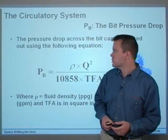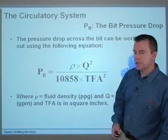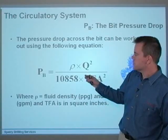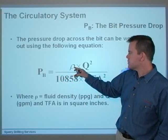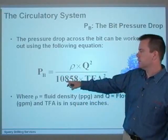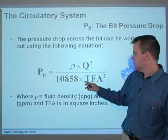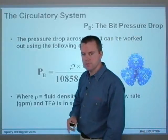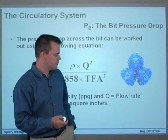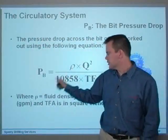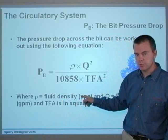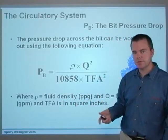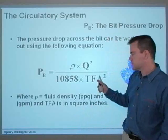Looking at Pb, which is the bit pressure drop. The pressure drop across the bit can be worked out using this equation: Pb equals density times the square of the flow rate divided by 10858, and also divided by the square of the total flow area of the bit. In this equation, rho is the fluid density in pounds per gallon, Q is flow rate in gallons per minute, and TFA is in square inches.